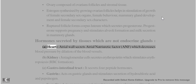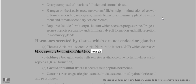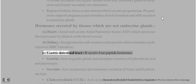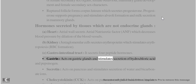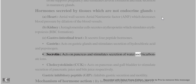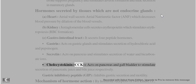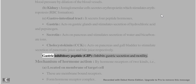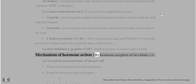Hormones secreted by non-endocrine tissues: (a) Heart – atrial wall secretes atrial natriuretic factor (ANF), which decreases blood pressure by dilation of blood vessels. (b) Kidney – juxtaglomerular cells secrete erythropoietin, which stimulates erythropoiesis (RBC formation). (c) Gastrointestinal tract – secretes four peptide hormones: gastrin (stimulates HCl and pepsin secretion), secretin (stimulates water and bicarbonate secretion from pancreas), cholecystokinin/CCK (stimulates pancreatic juice and bile secretion), and gastric inhibitory peptide (inhibits gastric secretion and motility).